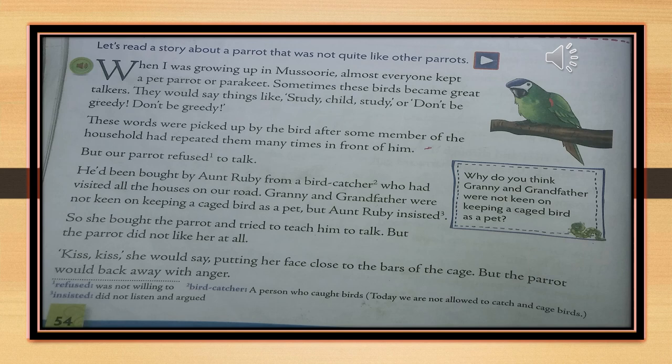For unknown reasons, the parrot did not want to talk. She used to say 'kiss, kiss,' putting her face close to the bars of the cage so the parrot could kiss her. But the parrot disliked her. When she used to do that, he was very angry and used to back away with anger.